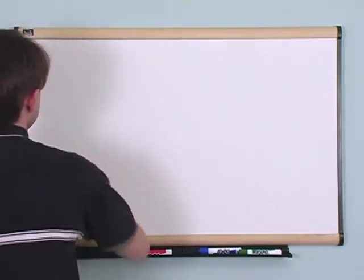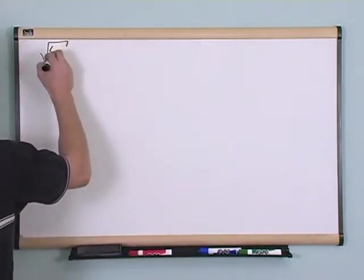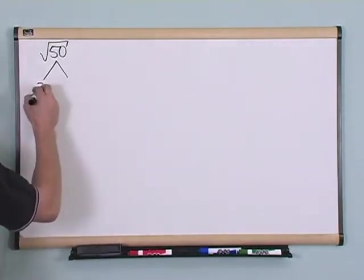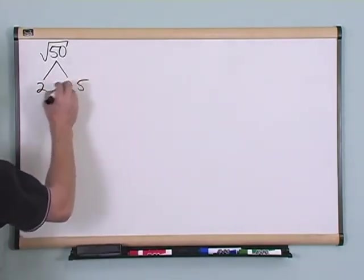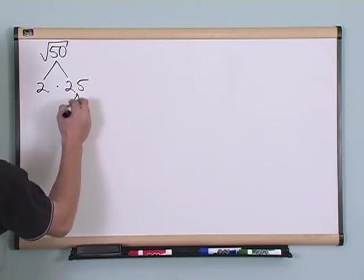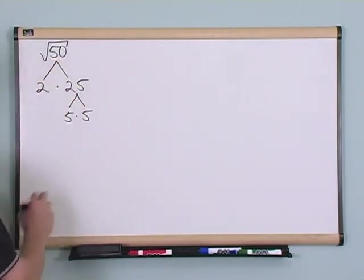And we'll go ahead and work a lot of examples here so you get the hang of things. What if I had the square root of 50? Well, off the top of my head I know that 2 times 25 will give me 50. I can't do anything more with the 2, but I know that under 25, 5 times 5 will give me 25.